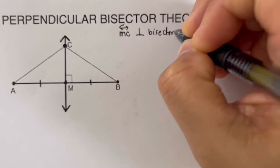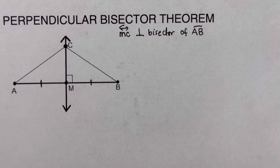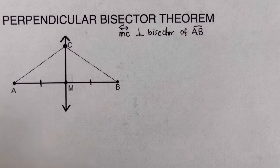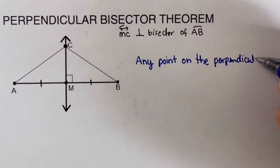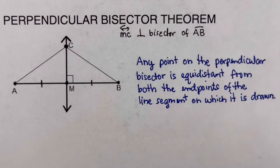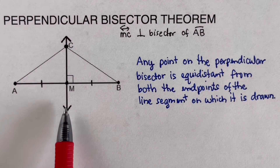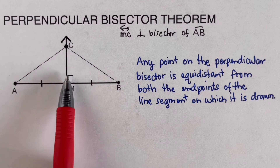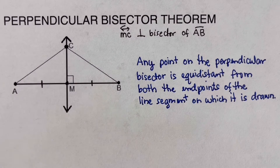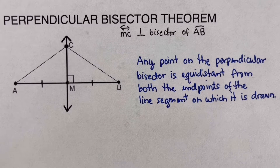The perpendicular bisector theorem states that any point on the perpendicular bisector is equidistant from both endpoints of the line segment on which it is drawn. So if we place dots on line segment CM, the distance from any such dot to point A and to point B would be equal or congruent.